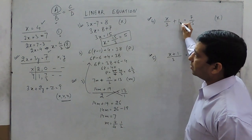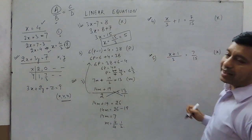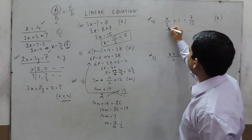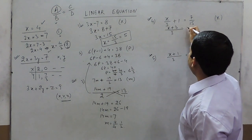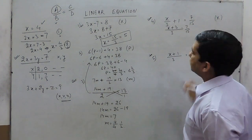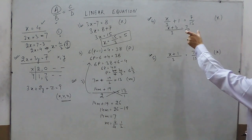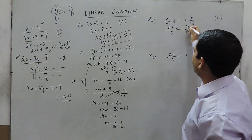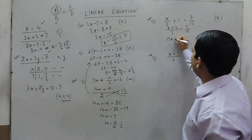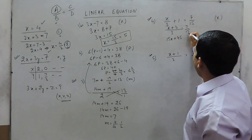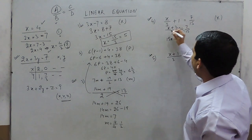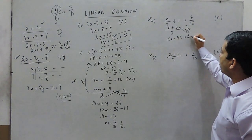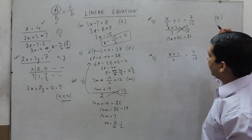In the next equation, it is x upon 3 plus 1, which is not directly in the format of a upon b equals c upon d. We can take LCM as 3, so it becomes: x plus 3 equals 7 upon 15. Now it is in the format a upon b equals c upon d, and we can cross multiply to get 15(x plus 3) equals 21, that is 15x plus 45 equals 21.